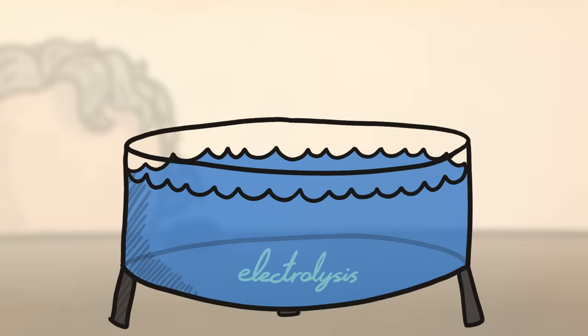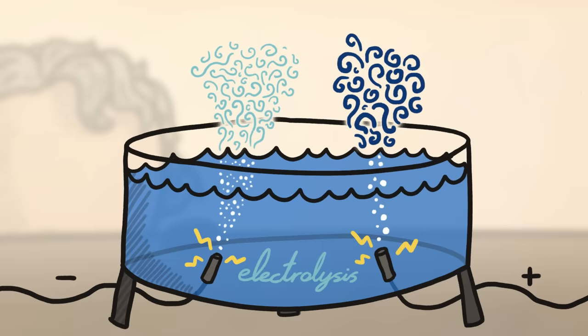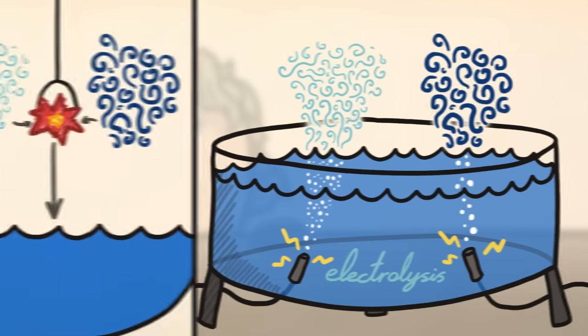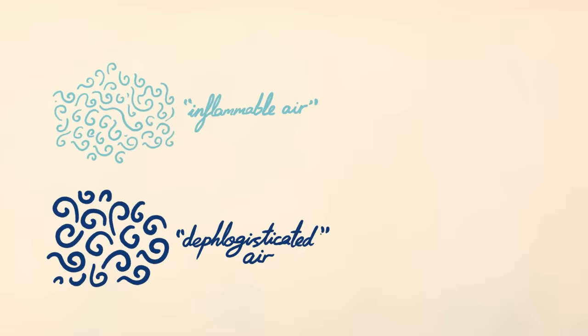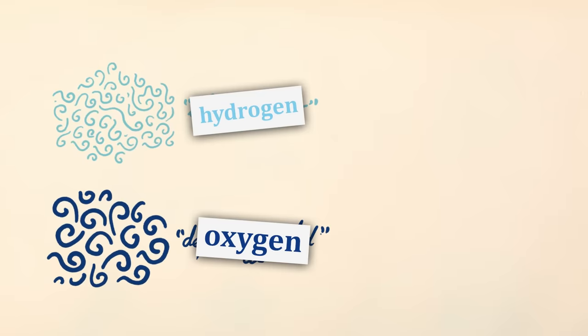The simplest method is a process known as electrolysis. Electrolysis uses an electric current to split water into two distinct gases, the very same gases that make water. These building blocks of water, which we now know as hydrogen and oxygen, were pretty clear by 1808.